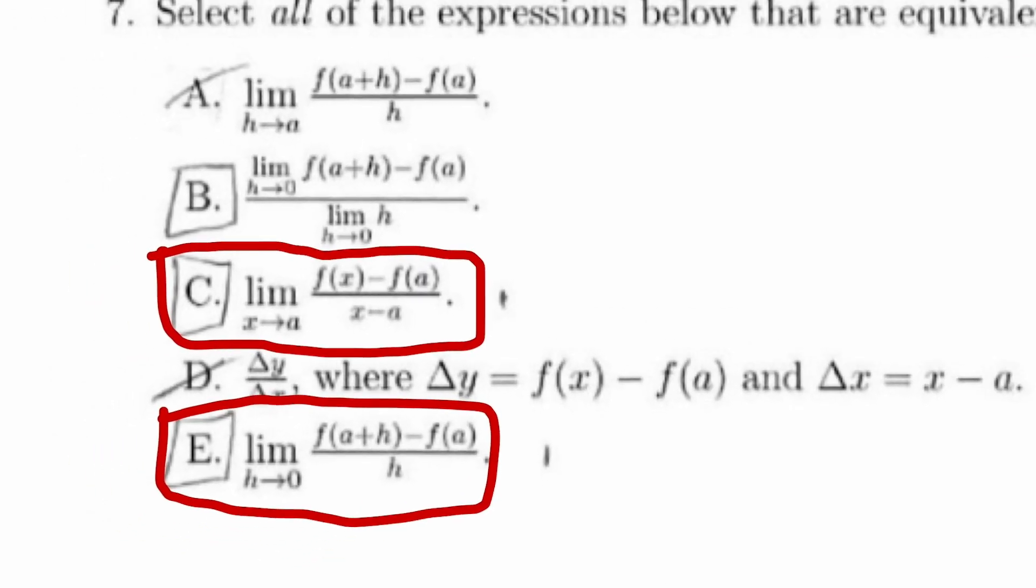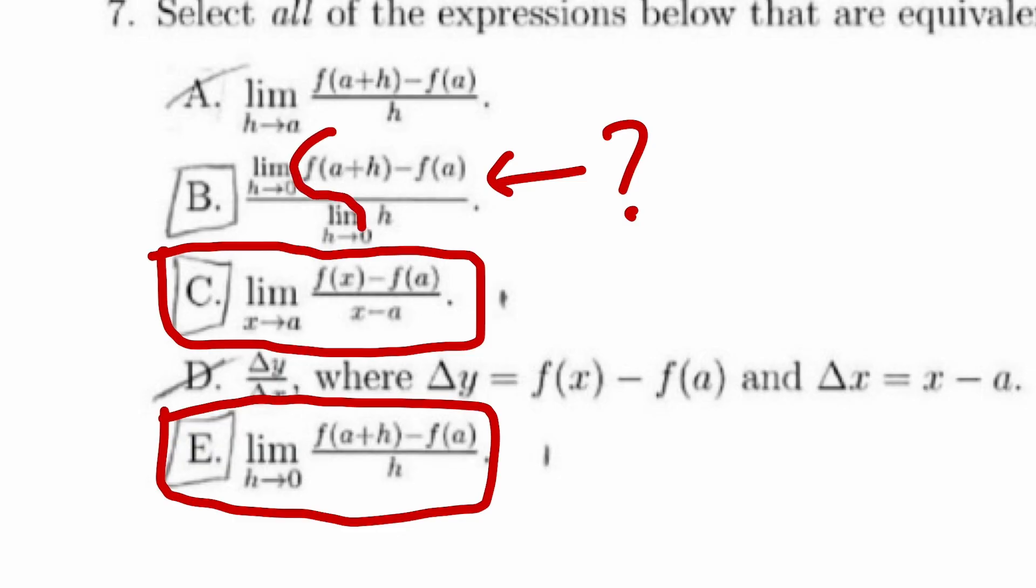But how come B, this one, is not correct? The main concern is that the structure is very similar. We have f of a plus h minus f of a over h. The difference is that for B, we have the limit on the top and the limit on the bottom. Compared to choice e, we only have the limit in the front.